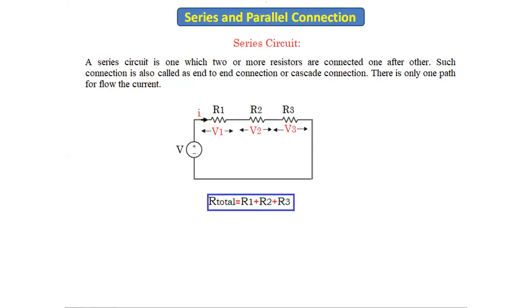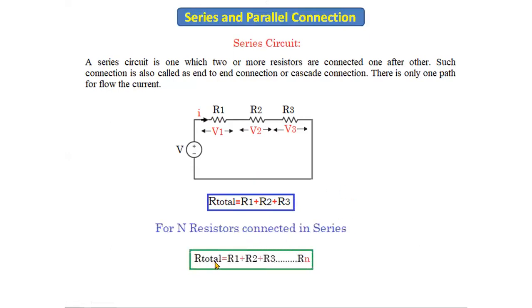Now let's see what is the total equivalent resistance. Using this formula, we find the total equivalent resistance: R_total is equal to R1 plus R2 plus R3. If there are n resistors connected in series, we use the formula R_total = R1 + R2 + R3 and so on up to Rn.